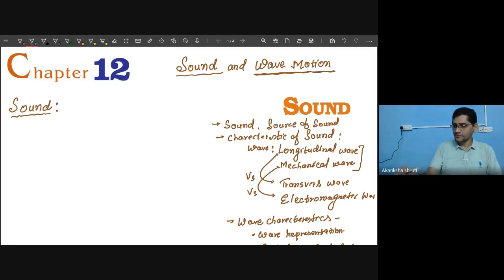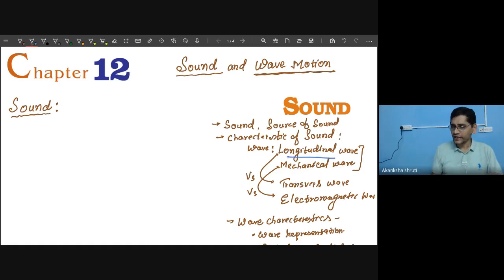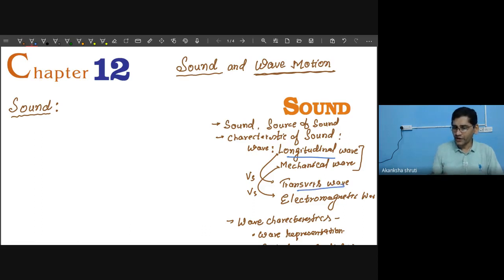Sound propagates as a wave with a special characteristic in which the particle moves along the direction of motion of the energy — such a wave is called a longitudinal wave. Contrary to this, there is also another kind of wave based on the motion of the particle called a transverse wave. So we will learn about what is a longitudinal wave and what is a transverse wave.